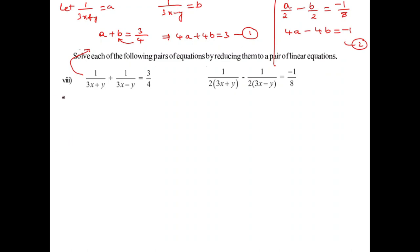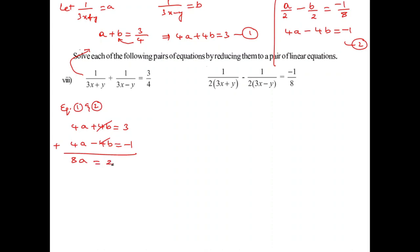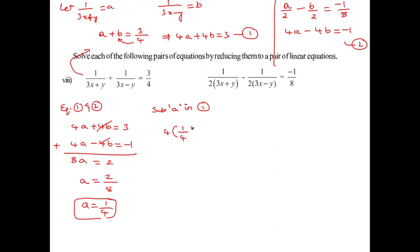Substituting A equals 1 by 4 into equation 1: 4 times 1 by 4 plus 4B equals 3, so 1 plus 4B equals 3. Shifting: 4B equals 2, so B equals 1 by 2.